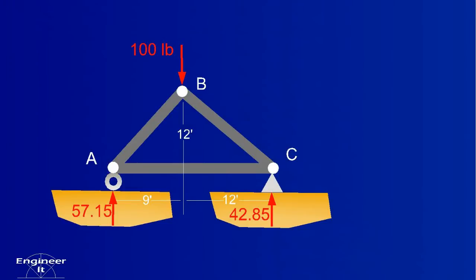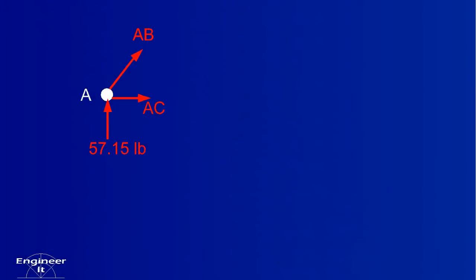Beginning at any joint will suffice, so why not start at A? AB and AC have been drawn assuming they pull on joint A. They'll fix themselves later if we're careful with the signs.